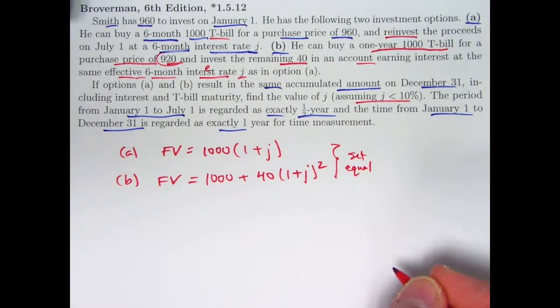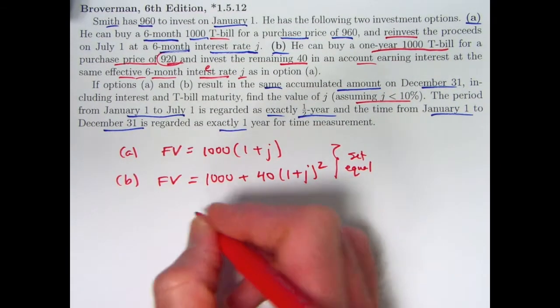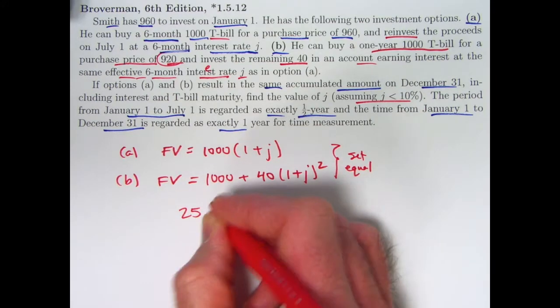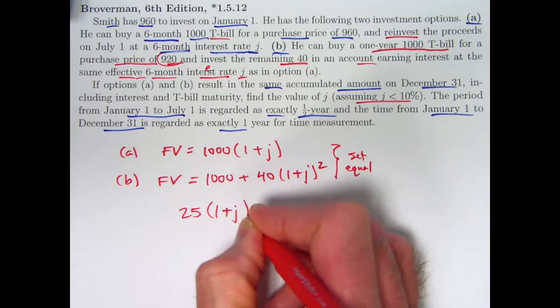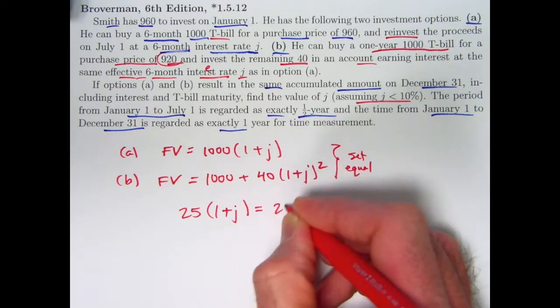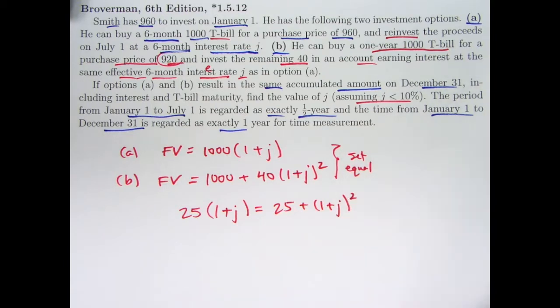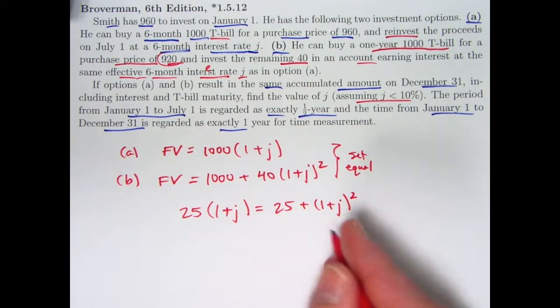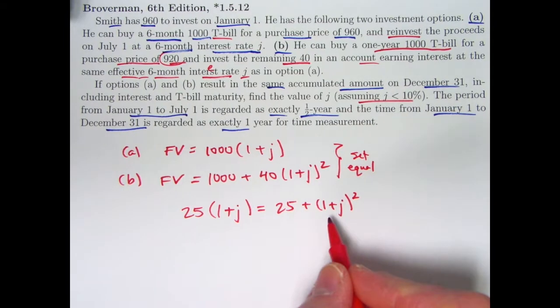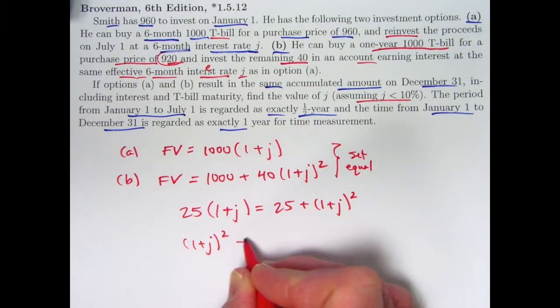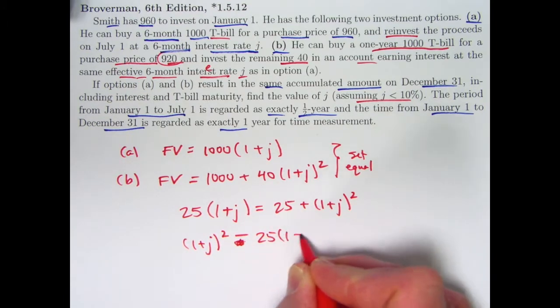It's probably simplest to divide everything by 40 after setting them equal. 1,000 divided by 40 would be 25. So I get 25 times 1 plus J equals 25 plus 1 plus J squared. It's also probably simplest to not bother expanding this out. You can rearrange this as a quadratic in the expression 1 plus J. Be careful, don't make a mistake like I almost did there.